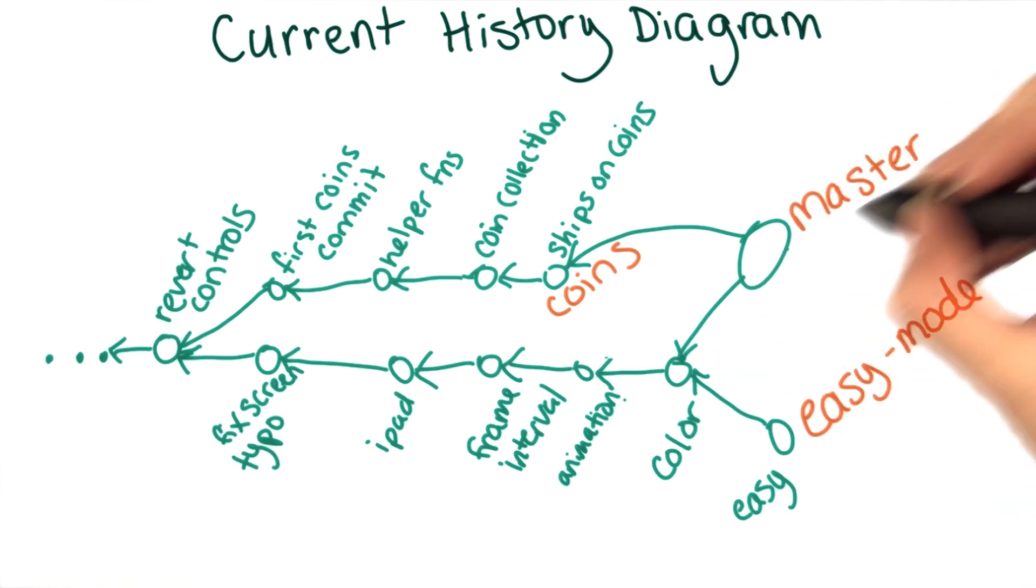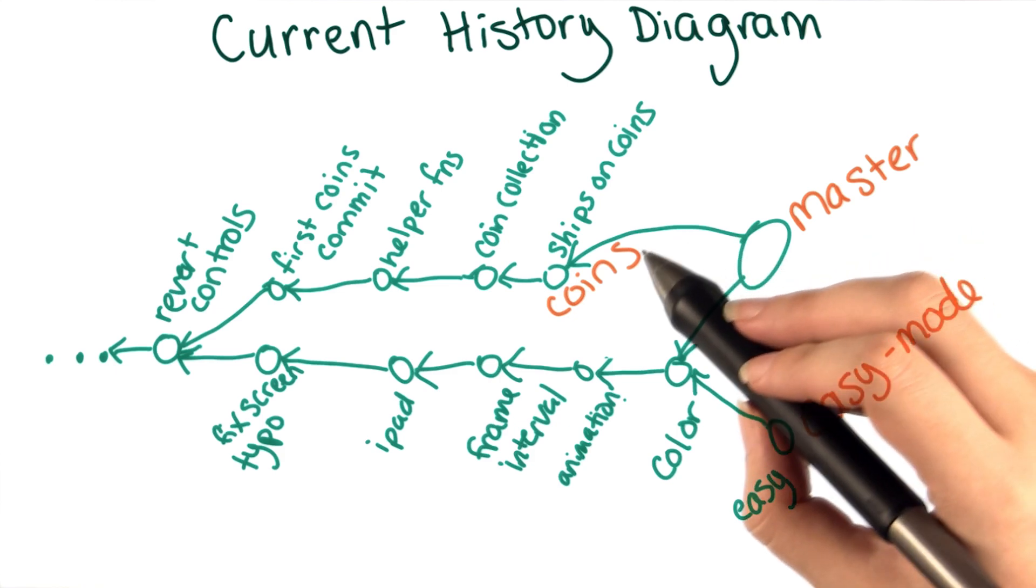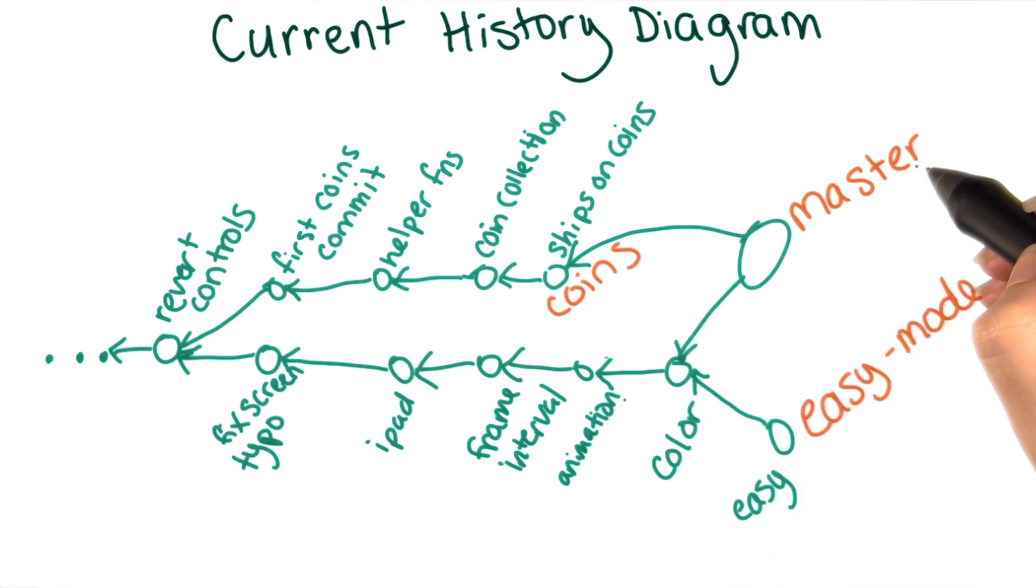Since the master branch is the one getting updated, Git practitioners will often refer to this process as merging the coin branch into the master branch.